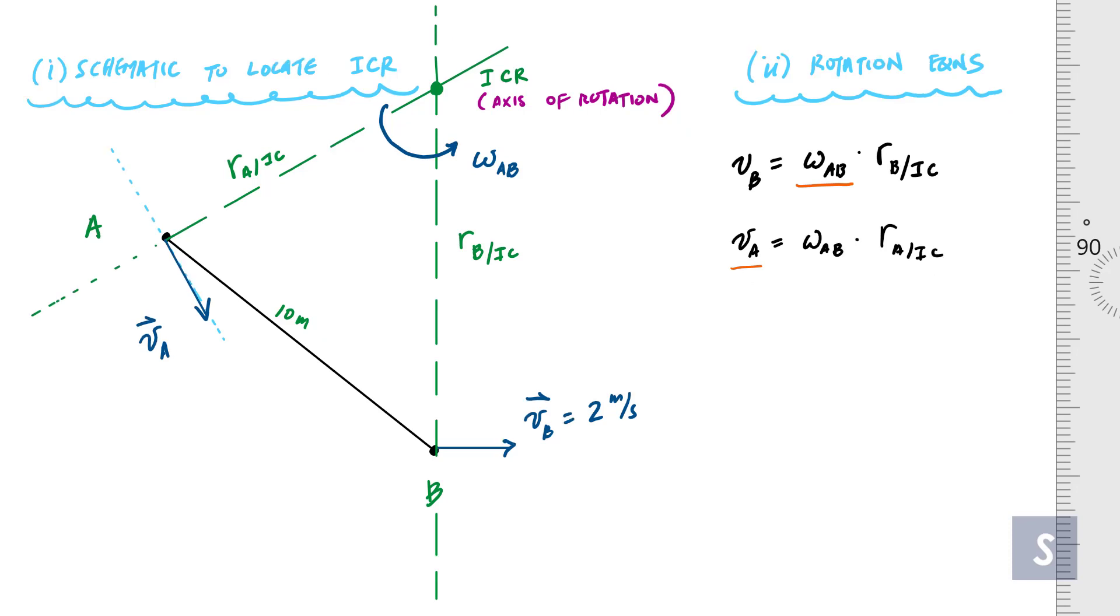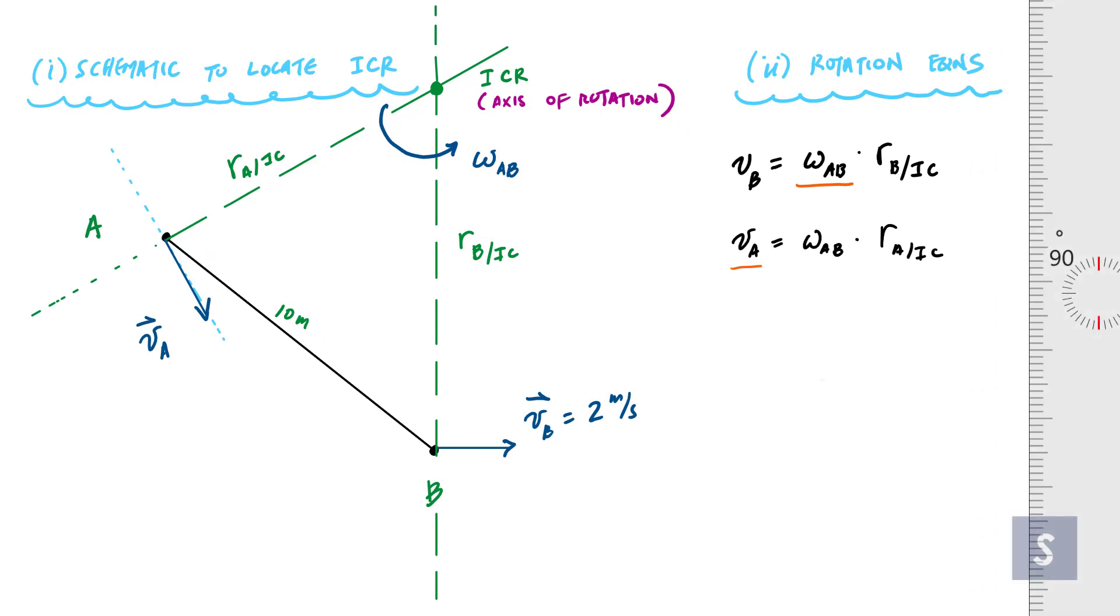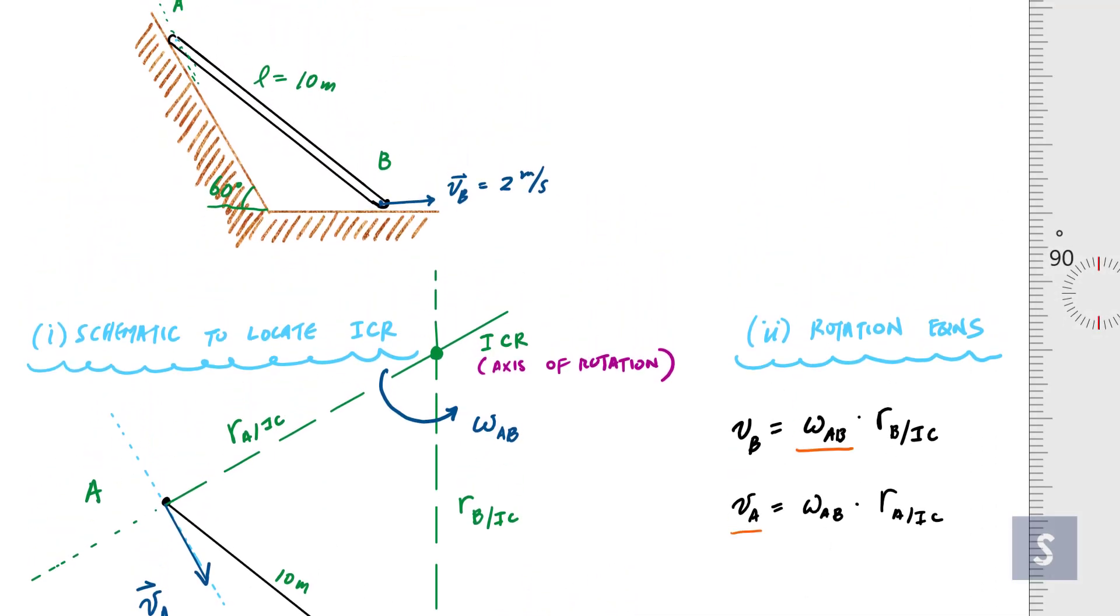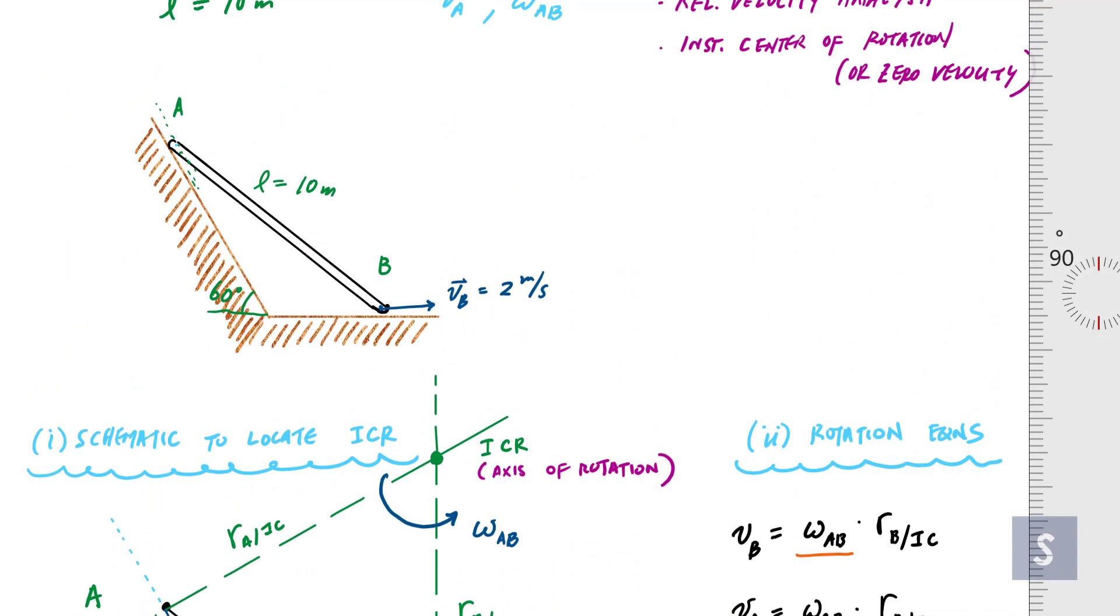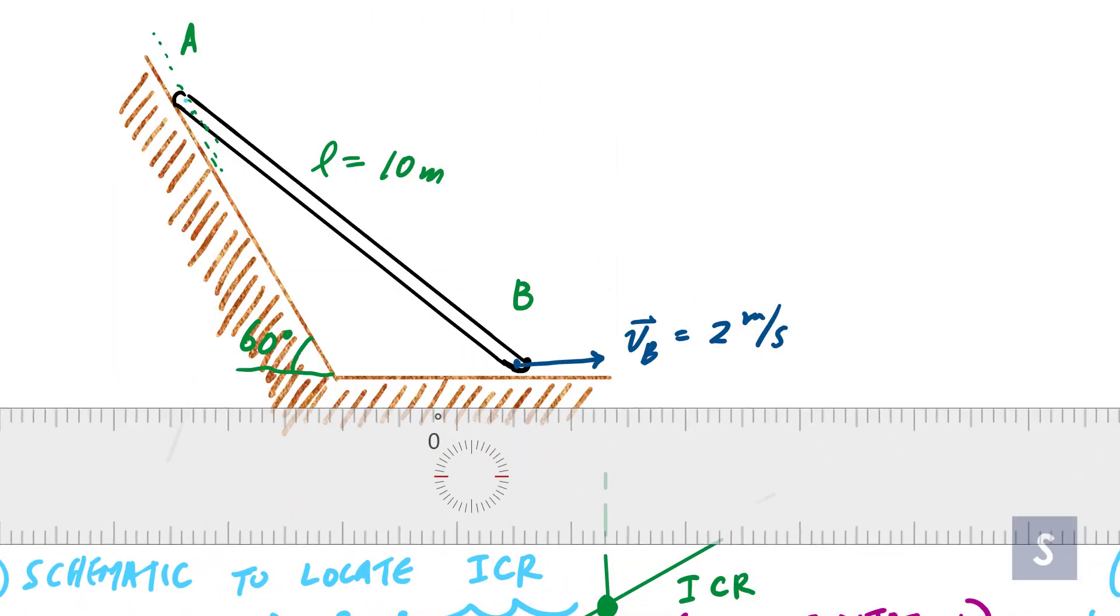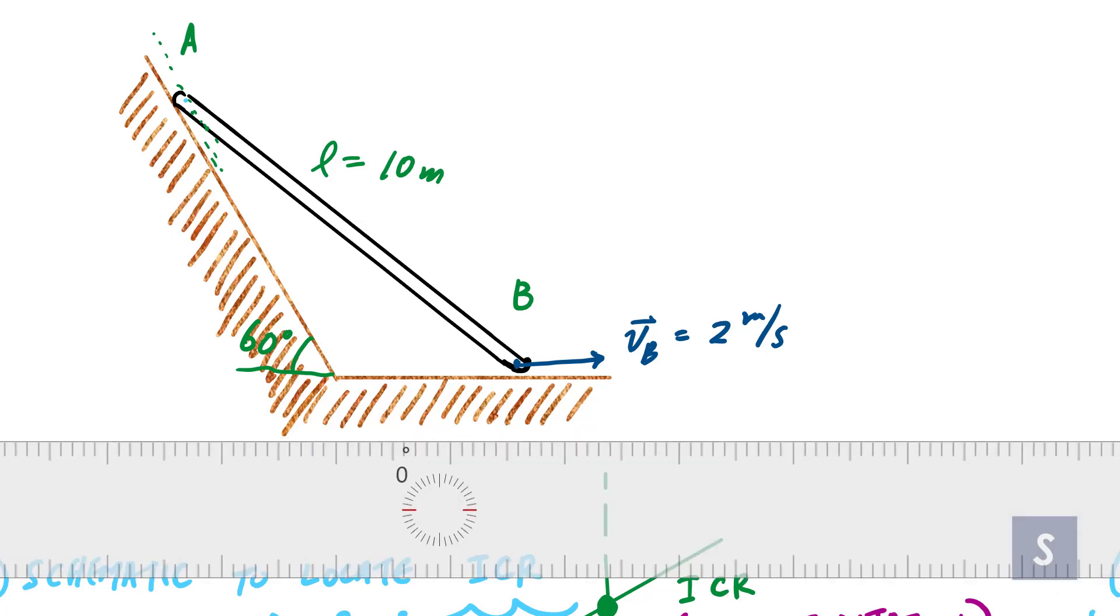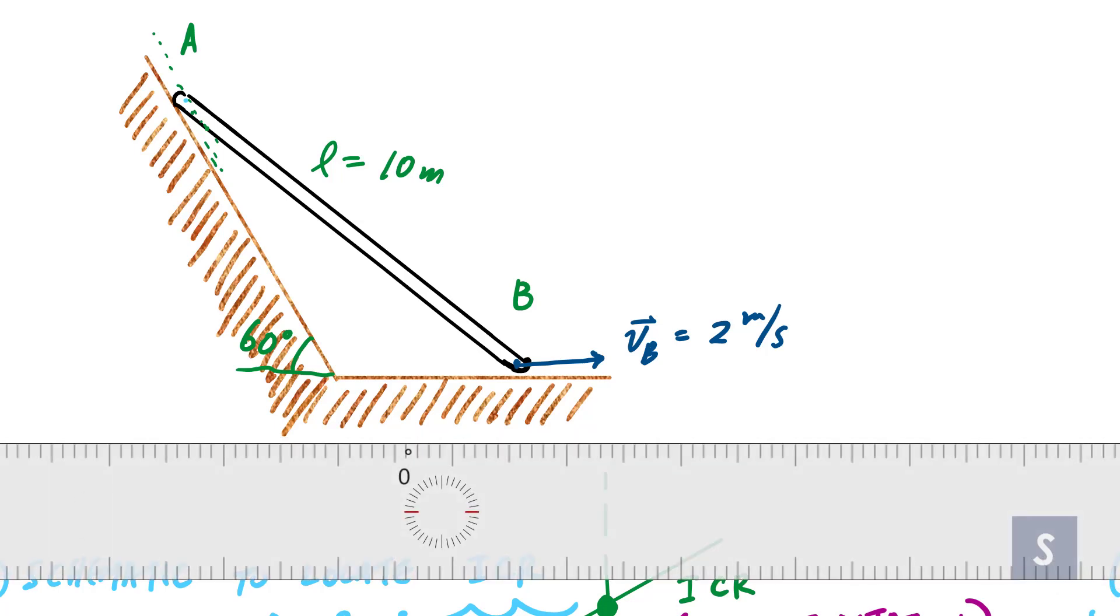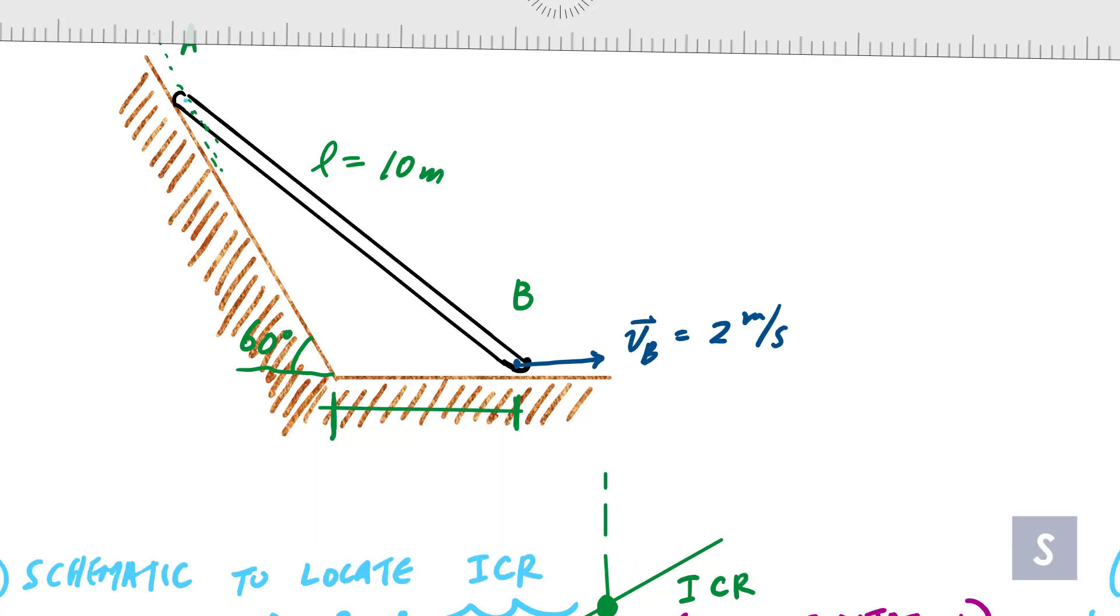And what we normally do is we're going to use geometry to find these radial distances from the instantaneous center. And then we can use the known velocity at B to find omega AB here. And once we have omega AB, we can plug it into the VA equation to get VA. So the thing that we need to do next is really work on a bunch of geometry. I forgot to mention that this distance right here is actually four meters.